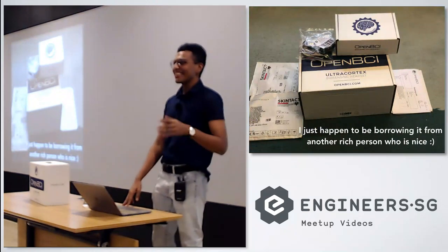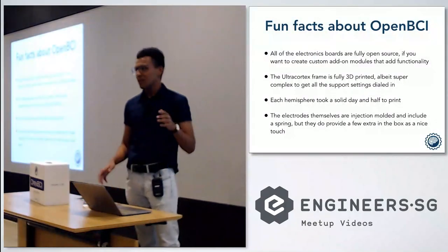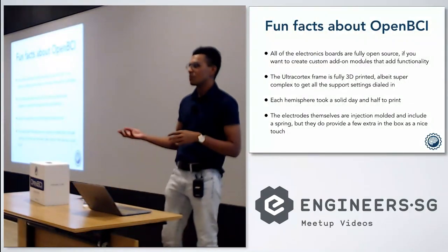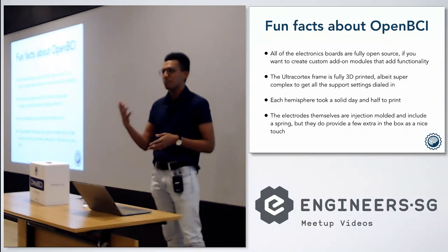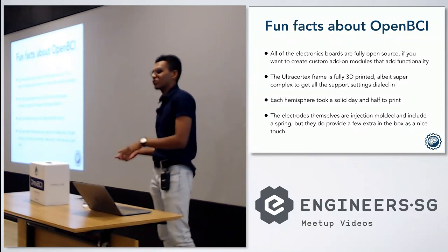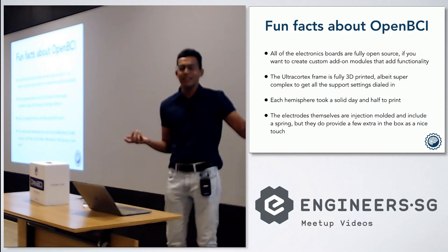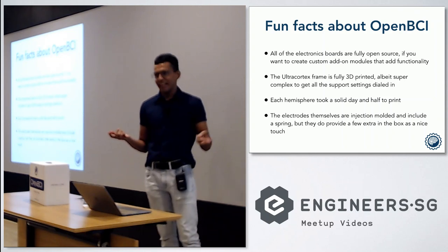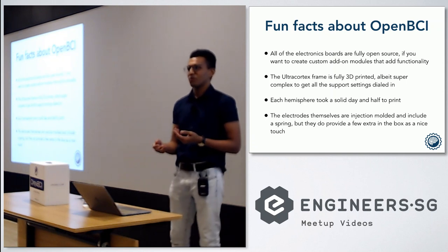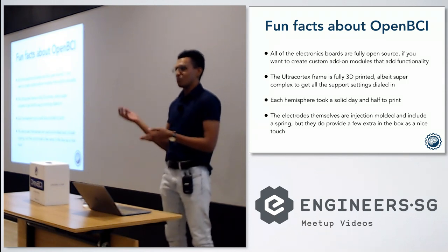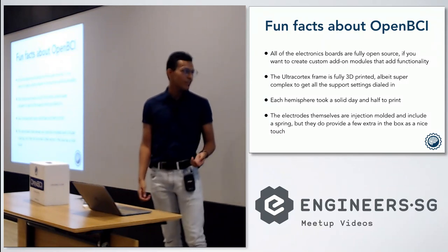So there are a few interesting things about OpenBCI. Firstly, if you want to make add-ons to the board — things that add hardware capabilities — let's say you want to add an FPGA that does some sort of fast Fourier transform in hardware, you can do that because the code and the electronics board are completely open source. Secondly, the frame itself is completely 3D printed. When you want to print your frame out, you just print it at home and assemble it yourself, which reduces the cost quite a significant amount.